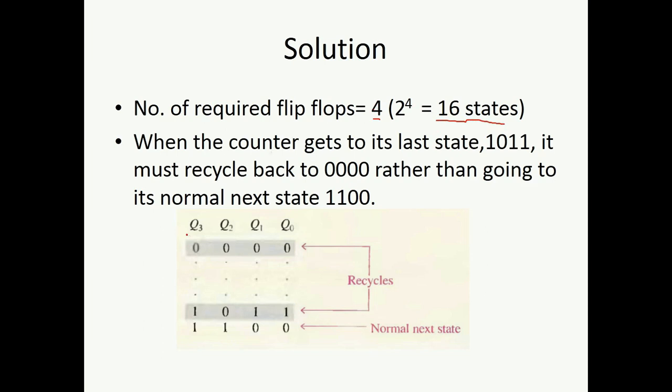As per the truth table, our counter must count from 0000 to 1011, that is from 0 to 11. The 12th state should not come. Although a normal next state will be 12, in this counter we do not want 1100. Rather, we require 0000, the recycle condition after 11.